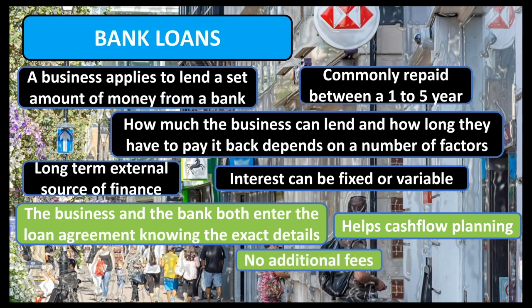Also, there are no additional charges as long as the business adheres to the loan agreement. The cost of finance such as interest and additional charges are typically lower than many other sources of business finance. If the business is taking a loan to purchase an asset such as a car or machinery, it can match the length of this loan to the estimated lifetime of their asset, meaning that they can renew their loan and purchase a new asset at this point.